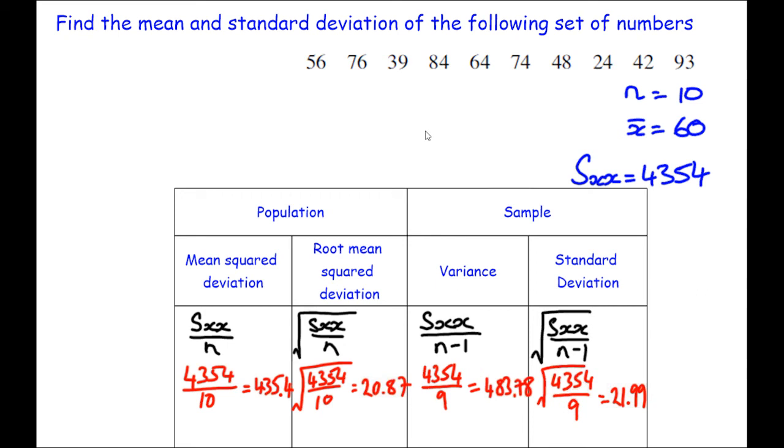For population, that's the mean squared deviation, the root mean squared deviation, you will be dividing by n. And for samples, the variance, the standard deviation, you'll be dividing by n minus 1.